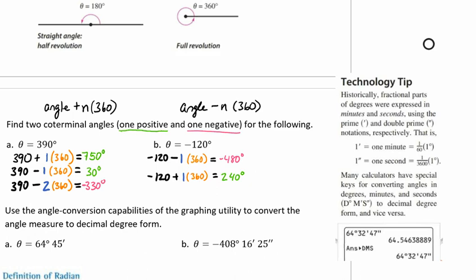Many calculators have special keys for converting our angles into degrees, minutes, and seconds, which we call decimal degree form, and being able to go backwards as well. And so that's what we're going to talk about and to do and to learn how to do here.